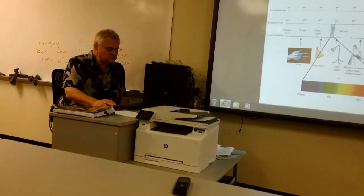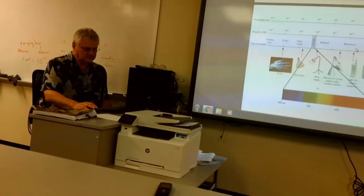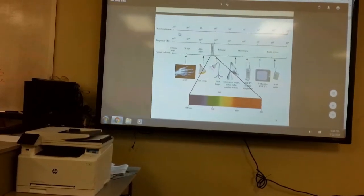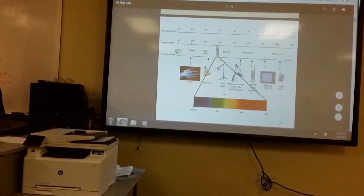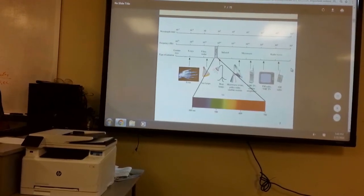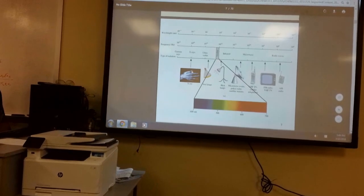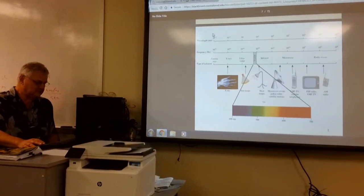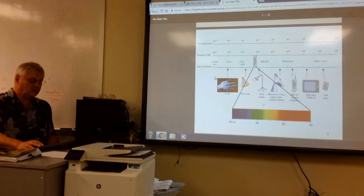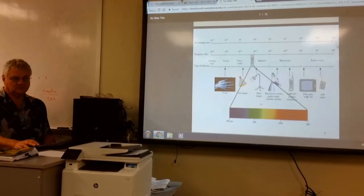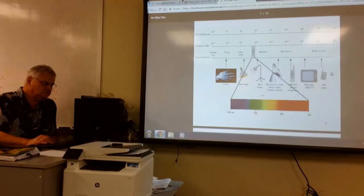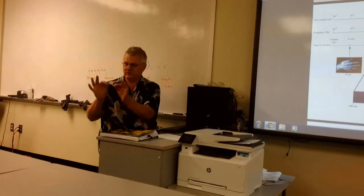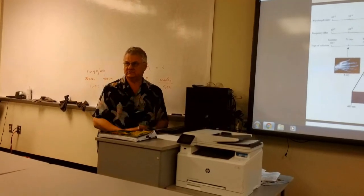Cell phones use wavelengths in the lower energy end of the spectrum. Generally speaking, moving from left to right on the spectrum, we go to longer wavelengths and shorter frequencies. The highest frequencies are on the left, and the longest wavelengths are on the right.